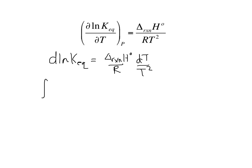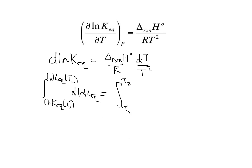We can integrate both sides of this equation. As always, we're going to want to integrate from a value where we know the equilibrium constant to any other value. We'll integrate the right-hand side from T1 to T2, where T1 is a temperature at which we know the equilibrium constant, of delta H of reaction standard state divided by R times DT over T squared. In the simple case where we can treat the delta H of reaction as constant, this integral is fairly easy to do.